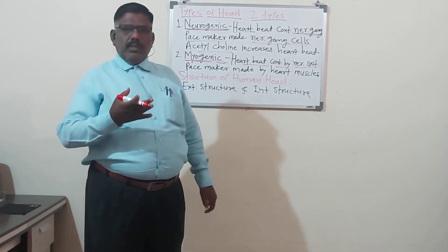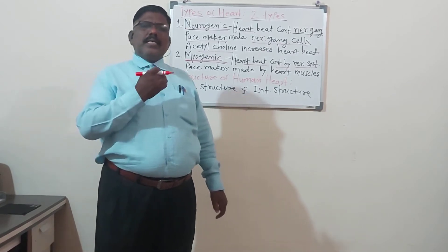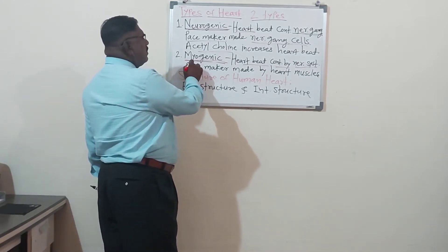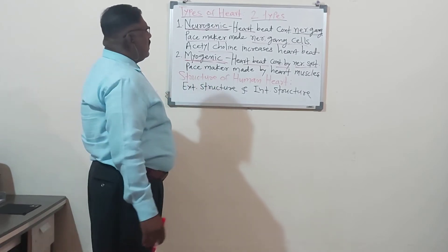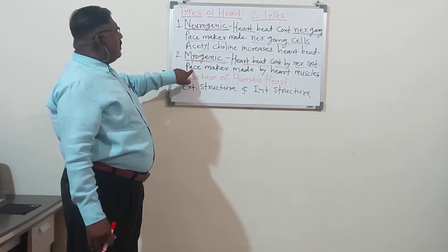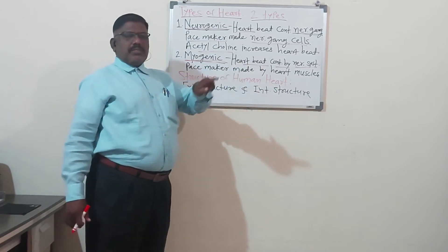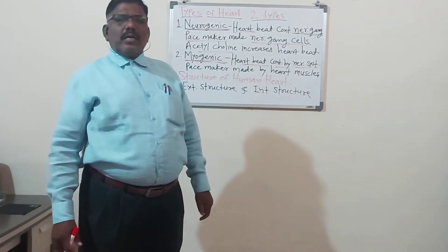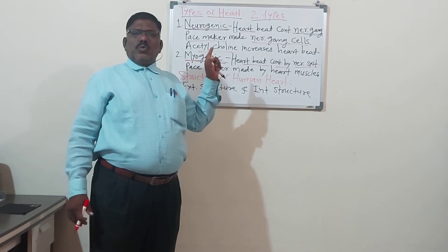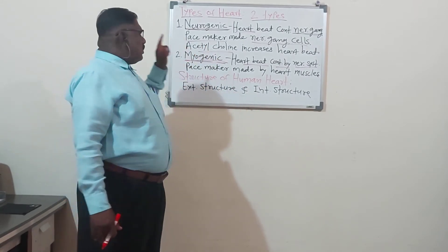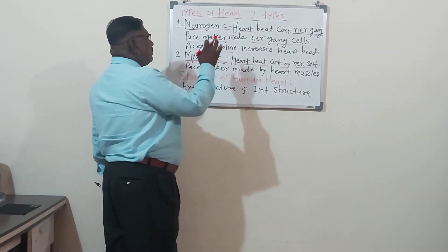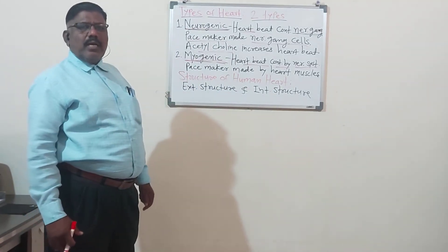You can listen to that lub-dub sound by using a stethoscope. In the myogenic heart, the pacemaker is made up of the heart muscles. Heart muscles are also called cardiac muscles. In human physiology, the human heart is of the myogenic type. The human heart is made up of heart muscles, also called cardiac muscles.